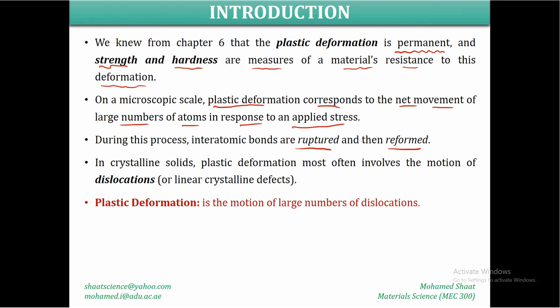In crystalline solids — which include all metals, many ceramics, and some polymers — plastic deformation most often involves the motion of dislocations. As discussed in Chapter 4, dislocation is one of the linear crystalline defects. We have two different types of dislocation: edge dislocation and screw dislocation. In plastic deformation, when a material is exposed to very high stress, dislocations are going to move.